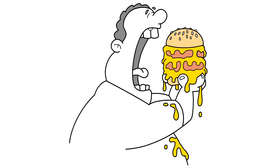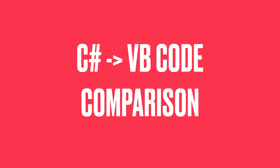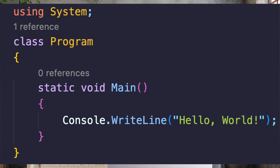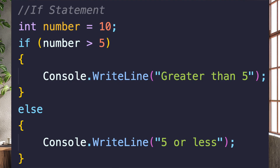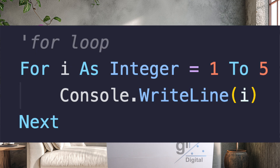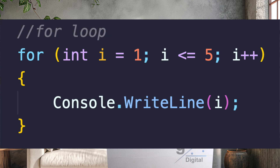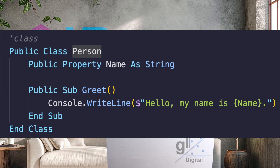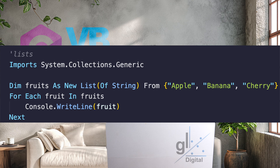Before we dive into the detailed comparison of Visual Basic and C Sharp, let's look at a few code example comparisons to give you a taste of how these languages differ syntactically. Here is a Hello World example written in Visual Basic, and here is its counterpart in C Sharp. Here is an if statement logical condition in Visual Basic and its C Sharp counterpart. Here is a for loop in Visual Basic and its C Sharp counterpart. And here is an example working with a generic list in Visual Basic and its C Sharp counterpart.